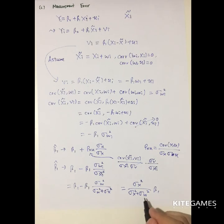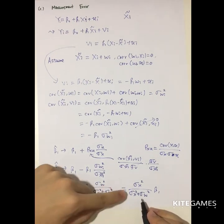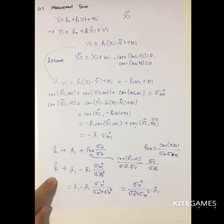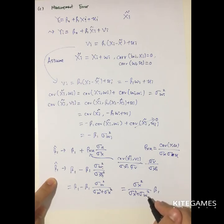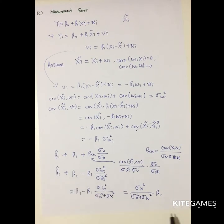Here you can see that variance of w is the measurement error. If variance of w is 0, there is no measurement error and beta 1 hat equals beta 1. But if there is very large measurement error — going to the extreme of infinity — then beta 1 hat approaches 0. This shows that larger measurement error causes beta 1 hat to deviate from the true beta 1.